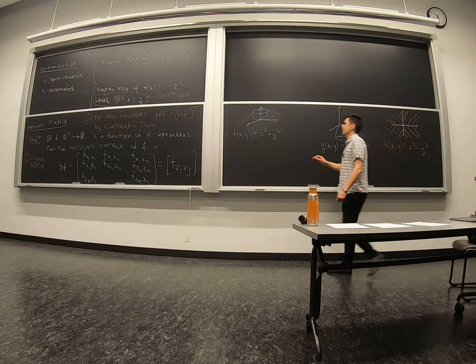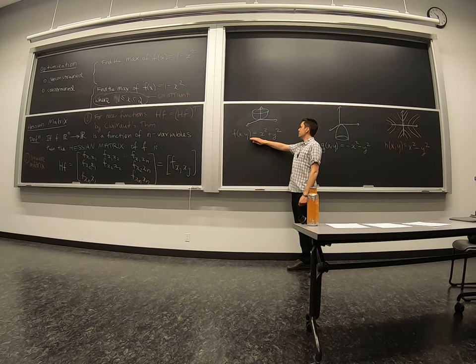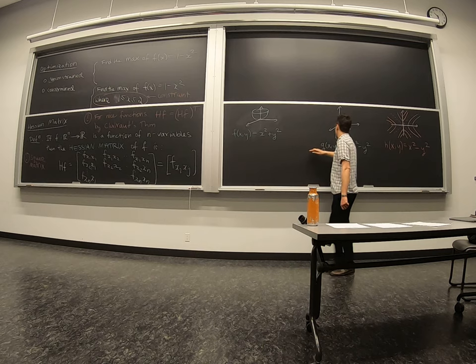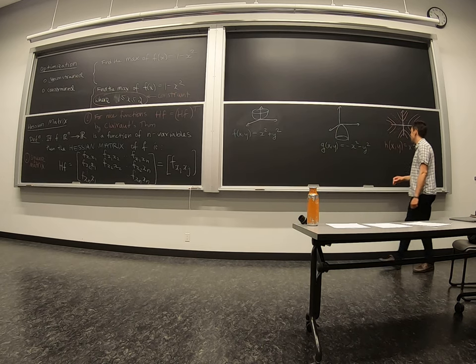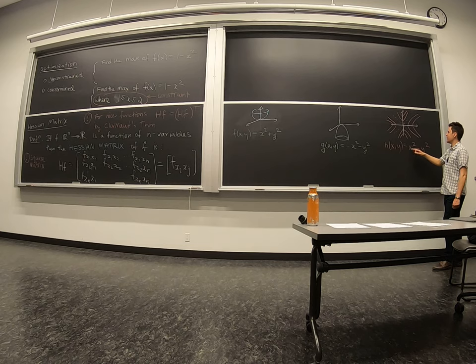So we've got this parabola, f of xy, negative parabola, negative x squared, negative y squared, and then this saddle surface, x squared minus y squared.